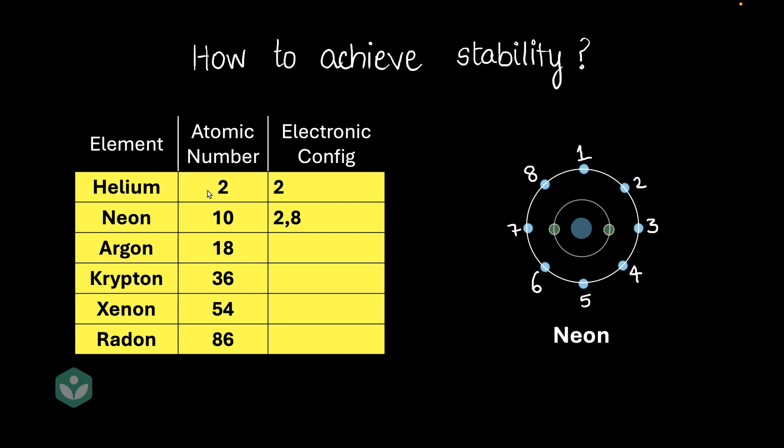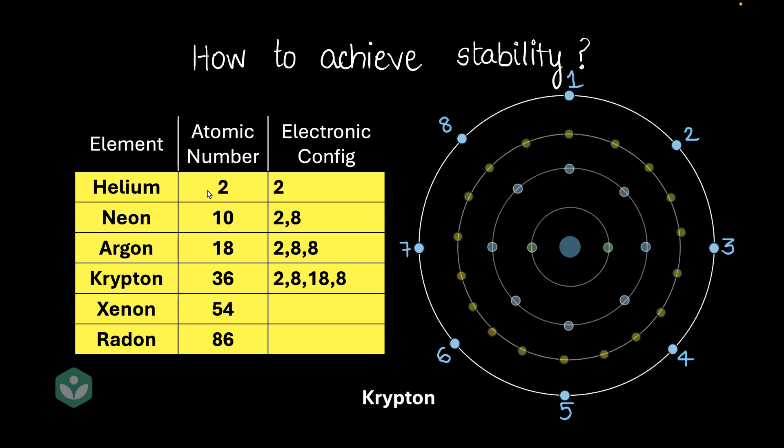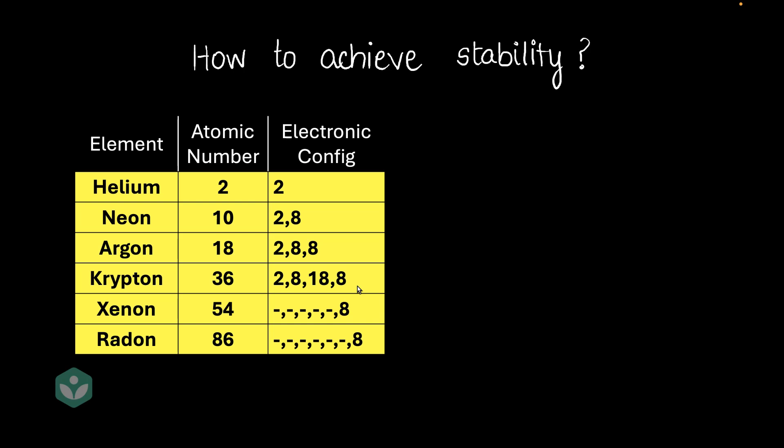What about argon? Argon has 18 electrons. So argon has two electrons in the innermost shell, eight in the next shell, and then eight again in the outermost shell, right? So that basically gives us an electronic configuration of two, eight, eight. What about krypton? Krypton looks like this. It has an electronic configuration of two, eight, 18, and then eight. Notice that there's a pattern that's getting formed. If we just leave out helium for a moment, you'll notice that we have eight electrons in the outermost shell in these three cases, right? And if you pull out the electronic configuration of xenon and radon, you'll notice that they do have eight electrons in the outermost shell.